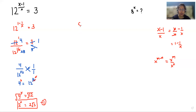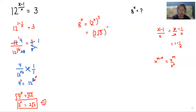Now we have to find the value of 8 power x. We can write 8 power x as (2 power x) cubed, which equals (2 root 3) cubed. The cube of 2 is 8 and the cube of root 3 is 3 root 3, so the answer is 24 root 3.